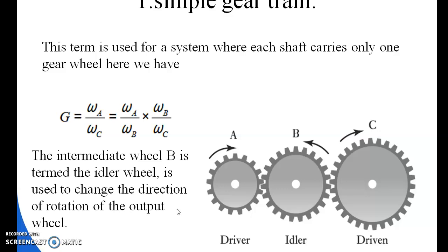The idler gear B is used to change the direction of rotation of the output wheel.